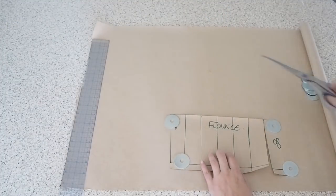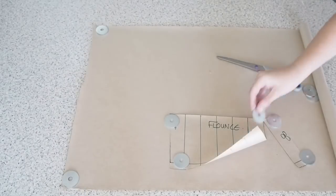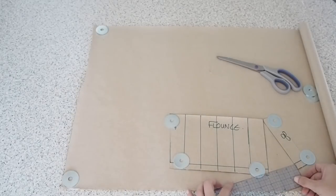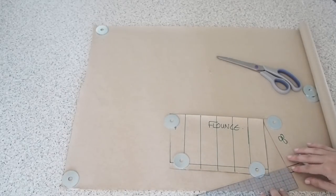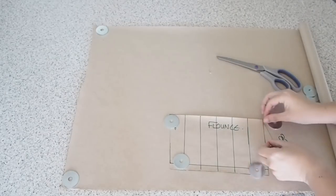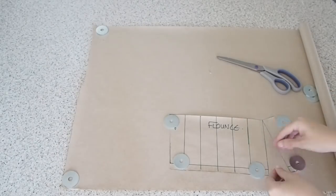And now I've just popped my flounce pattern piece on top of some fresh paper, slashed open my first line, and now I'm spreading that slash by two inches. It doesn't have to be two inches but for my skirt I know that two inches gives me a nice amount of flounce. So that's what I'm doing for mine.